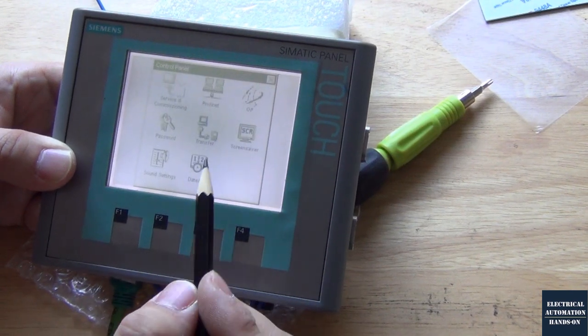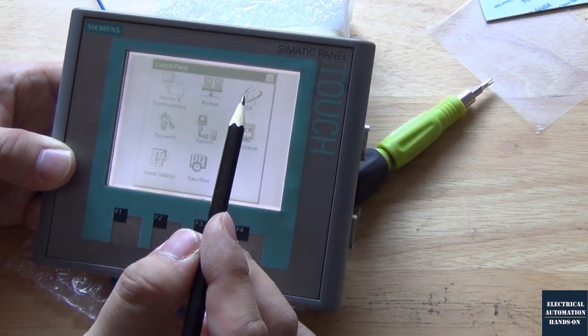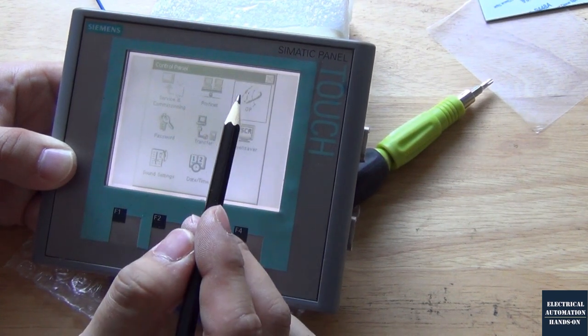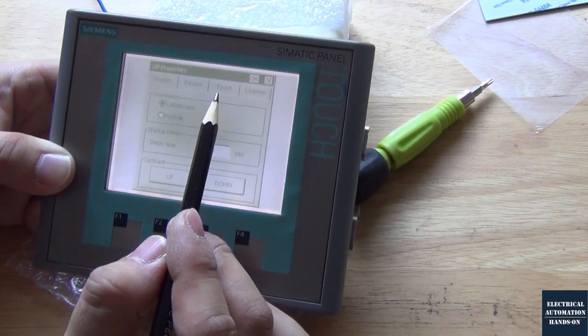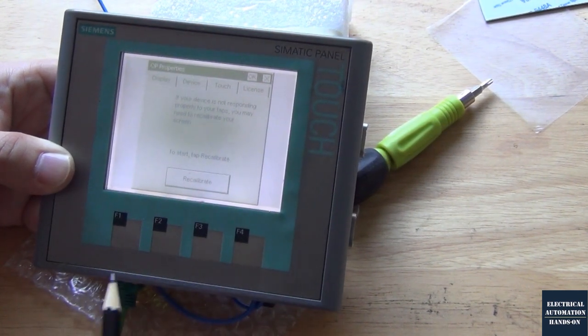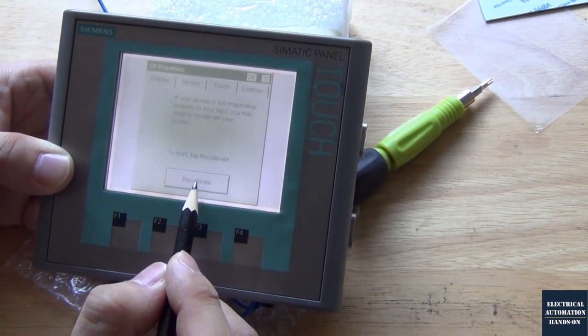And then we can go to the OP and then go to touch. Here, that is a recalibration function. So we can click this recalibrate function.